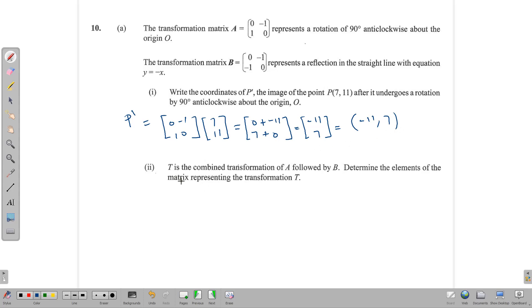The second part says T is the combined transformation of A followed by B. Determine the elements of the matrix representing transformation T. It says A followed by B, so it looks like we should find matrix AB. However, looking at this situation, if we use point P, then A affects it first, and whatever we get from that answer, B affects it next. So rather than finding matrix AB, we're actually going to find matrix BA. In matrices, BA and AB are not necessarily the same things.